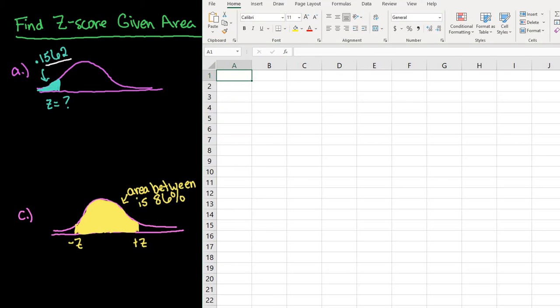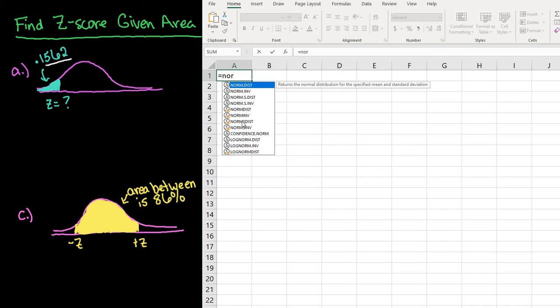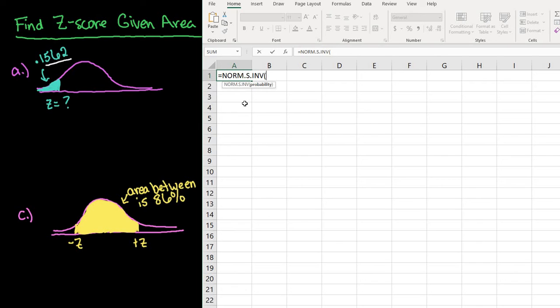So all you need to do is grab Excel. And then you're going to type in equals and start typing norm. And you'll see NORM.S.INV. The S stands for the standard normal distribution. So you can use this when you are looking for z-scores. And so you can just select that.